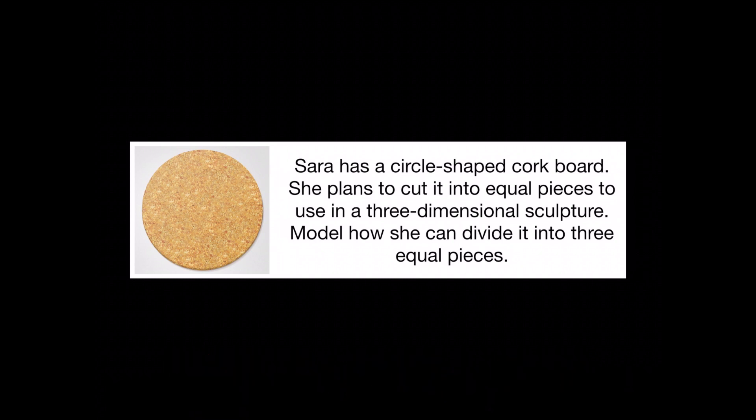What shape is the cork board? A circle. How many equal parts does the circle need to be partitioned into? Three.